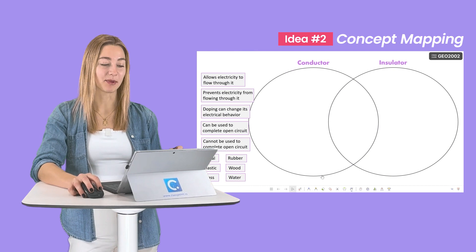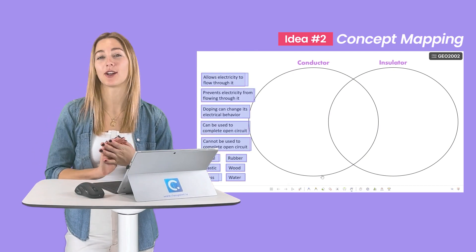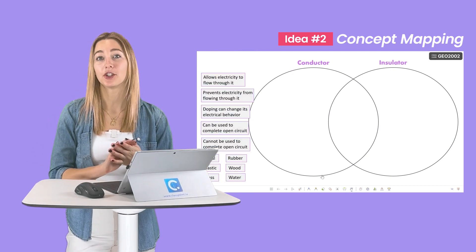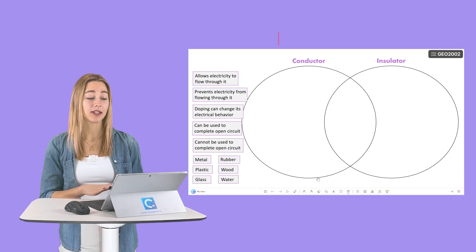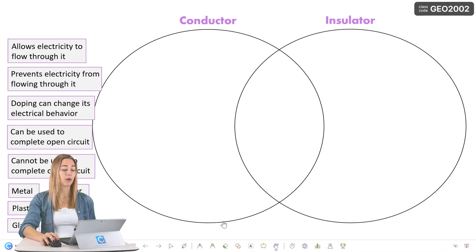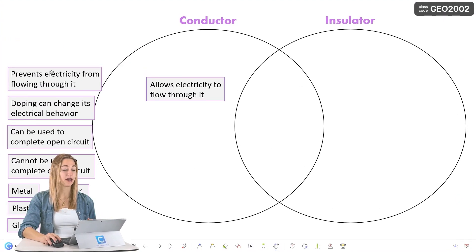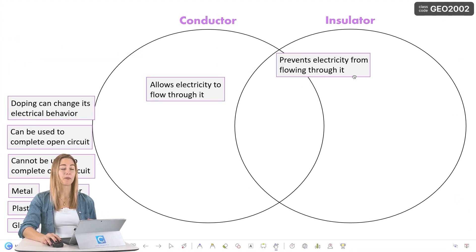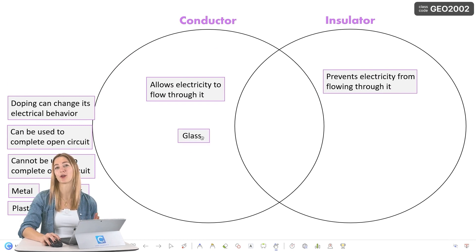Idea number two: concept mapping. Help students visualize and understand the relationship between different ideas. In this example, I want to illustrate the similarities and differences using a Venn diagram. Then I can discuss with my class and we can determine where each one of these descriptors should go.